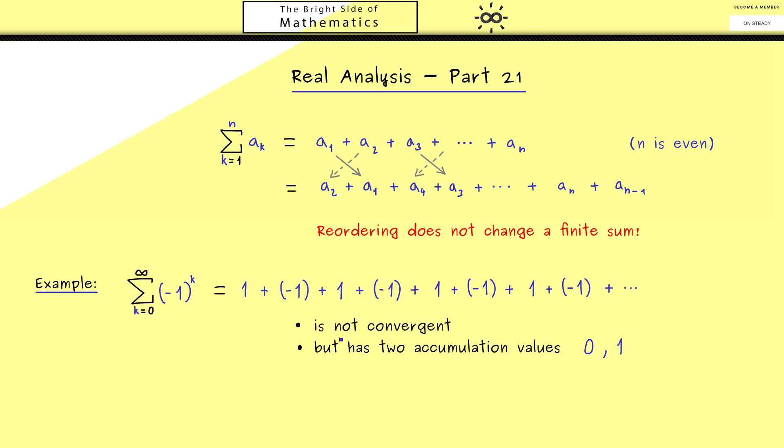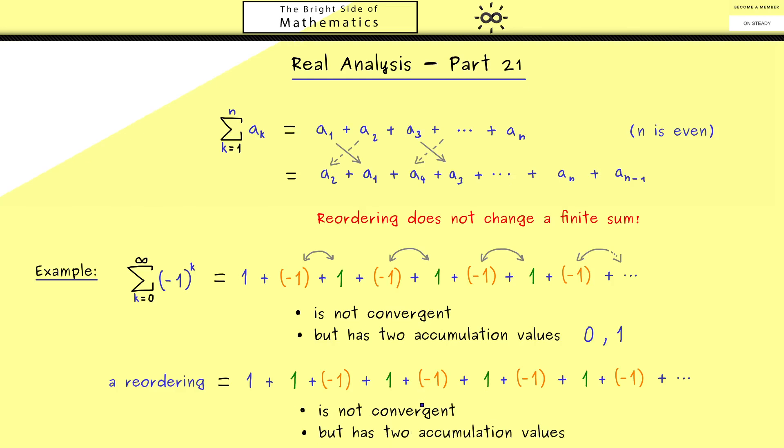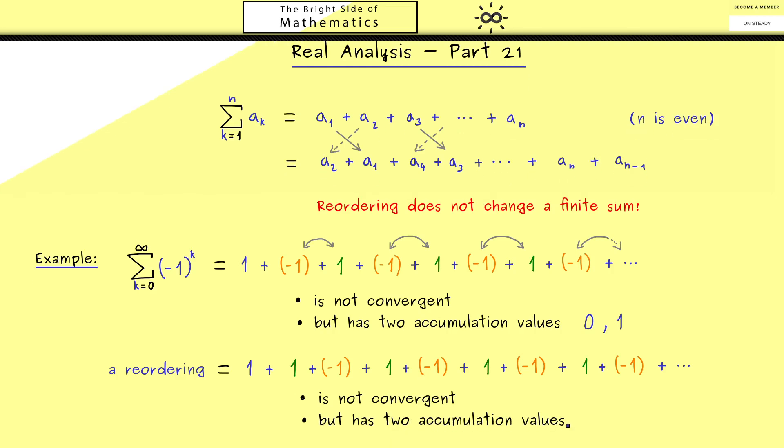Now we will reorder the series and get different accumulation values. We start with 1 again, but then exchange these terms. With the reordering, the series is still not convergent, but now we find accumulation values 1 and 2.